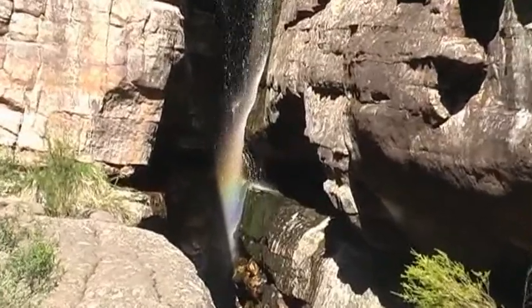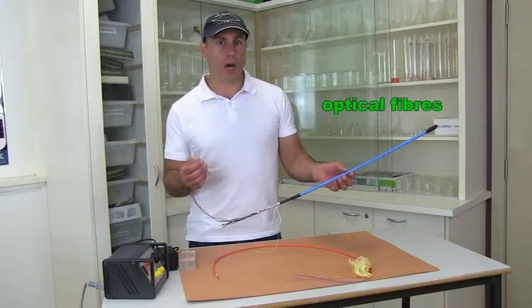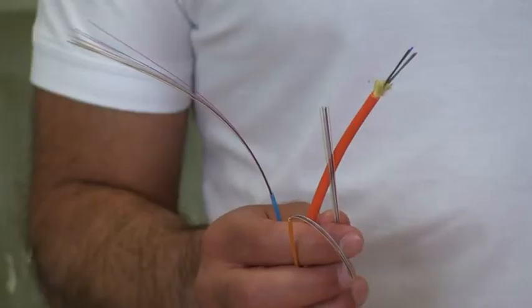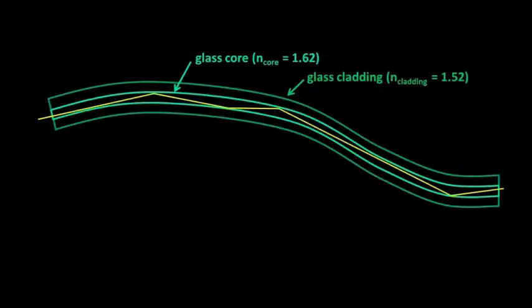We also look into, or up to, rainbows. Part E finishes with a look at optical fibres, what they are, how they're used, and how they work.